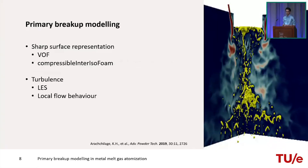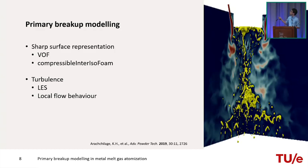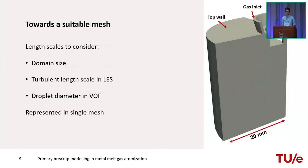For primary atomisation modelling, two techniques are combined: a volume of fluid method for sharp surface representation — specifically the compressible interIsoFoam solver in OpenFOAM — and LES for turbulence. As seen from literature images, gas jets create turbulent structures that have significant impact on the breakup behaviour of the liquid metal. The mesh must simultaneously represent the domain scale (~20 mm radius), turbulent LES length scales, and droplet diameters for sufficient VOF resolution.